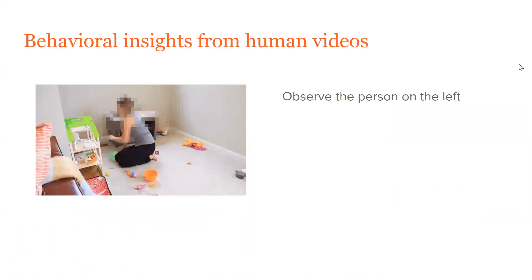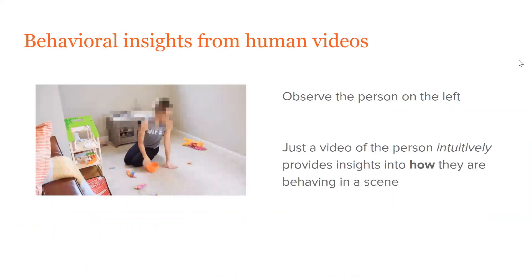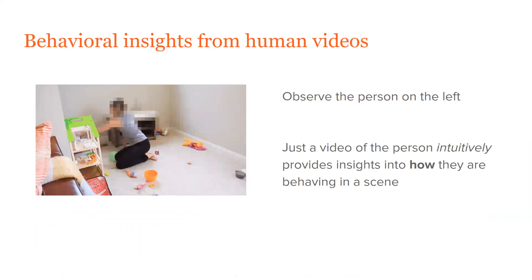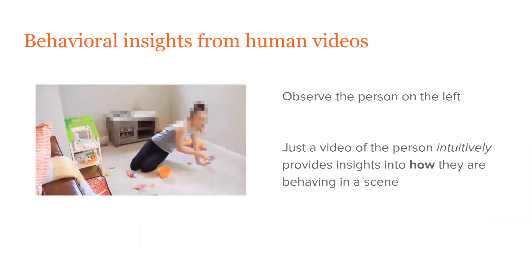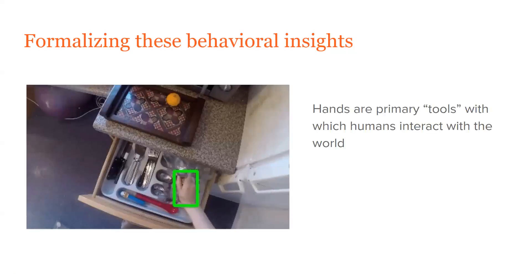Observe the person on the left. Just by watching a video of the person, we can see that they are engaged in goal-directed behavior, and we can infer how they are manipulating different objects in the scene. Observing the human gives us a lot of behavioral cues about how to act in the scene. So, can we actually formulate these insights for robot manipulation?